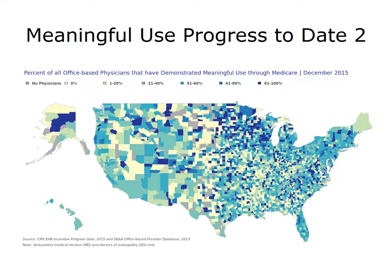Among eligible providers, the percentages of office-based physicians that have demonstrated meaningful use range from zero to 100%. Minnesota had the most providers who demonstrated meaningful use at 82%, while Alaska had the fewest at 20%. The important item to note is that every state in the union had eligible providers who demonstrated meaningful use – representing a significant change for office-based physicians, many of whom switched from paper-based records to electronic health records.